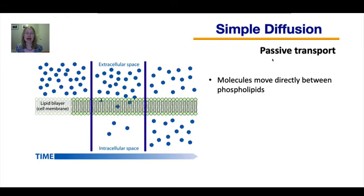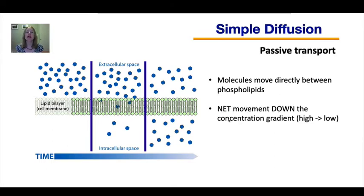The first type of transport we will focus on is simple diffusion, which is a type of passive transport. Simple diffusion occurs when molecules move directly between the phospholipids. They have a net movement down their concentration gradient — they move from high concentration to low concentration.